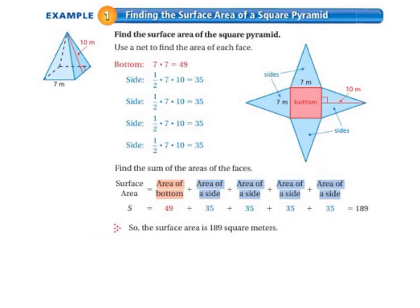Example 1: Finding the Surface Area of a Square Pyramid. Find the surface area of the square pyramid. Use a net to find the area of each face. If we look at the square pyramid to the left, you'll see that the bottom is 7 by 7, so that equals 49.